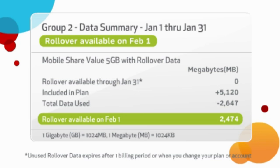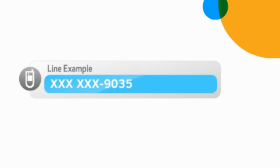It's important to note that you must use all of your original data plan allotment before using your rollover data. If you do not use the rollover data by the end of the extra cycle, it will expire. Now let's take a deeper look at your line to see how some of the more detailed areas of your bill work.